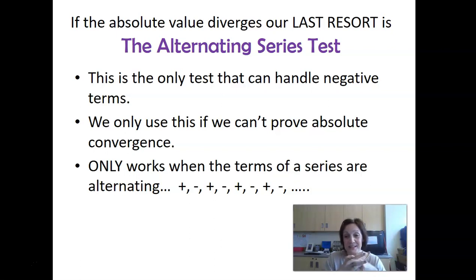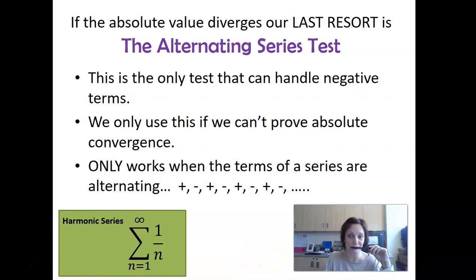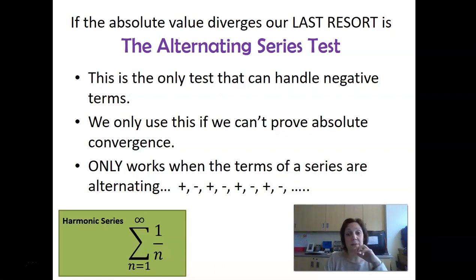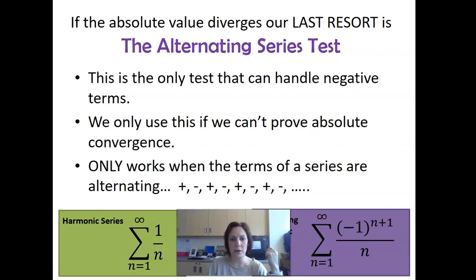We're going to use the alternating series test only when absolute convergence fails. For example, the harmonic series. It's not geometric. If I stop at P series, I could say it fails P series — that's n to the one, diverges. But let's say I didn't notice it was a P series and went into the big rectangle. What I'll find is that series diverges. But it has a friend: the alternating harmonic series.